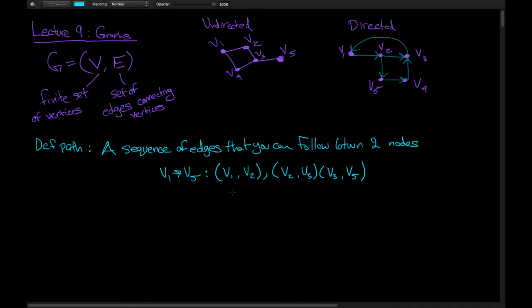That is a path from V1 to V5 in the undirected graph. A path from V1 to V5 in the directed graph would be given by V1, V2, V2, V5.